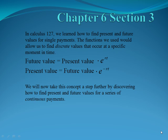In Calculus 1, we learned how to find present and future values for a single payment. The functions we used would allow us to find discrete values that occur at specific moments in time. We used the equation future value equals present value e to the rt and present value equals future value e to the negative rt. We now want to take this concept a step further by discovering what will happen if we make a series of continuous payments.